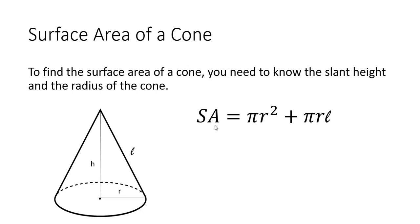And so the formula for the surface area is π r squared, so the area of the circle on the bottom. And then the area around the cone is π r L, where L is your slant height.